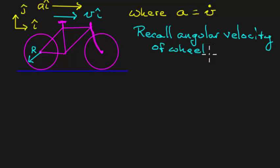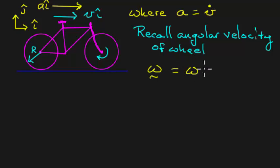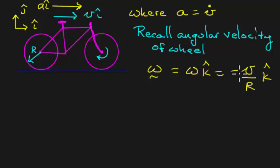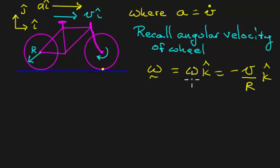Recall that in the previous video we derived an expression for the angular velocity of that front wheel. The front wheel is rotating clockwise, and we found that angular velocity omega in the k-hat direction equals minus v divided by r in the k-hat direction. We derived this by enforcing the rolling without slip condition: the point on the wheel in contact with the ground must have zero velocity, since the ground is not moving.